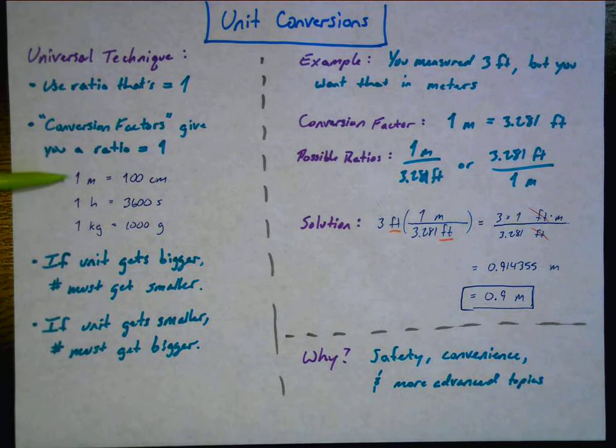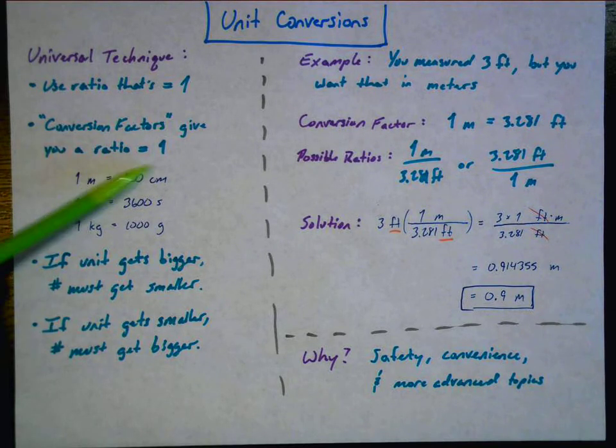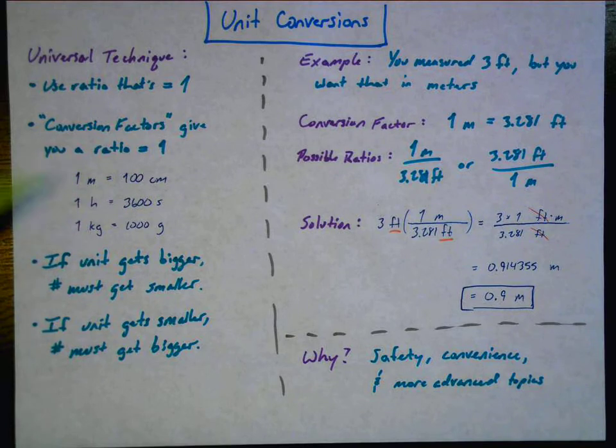These conversion factors give you a ratio equal to one. For example, one meter is equal to 100 centimeters. That's a comparison of two numbers, and it's a ratio. And when we put these together in a ratio, it will equal one because what's on the left side equals what's on the right side. The two sides are equal, hence the equal sign. One hour is equal to 3600 seconds. That will be used regularly. One kilogram is equal to 1000 grams. Those are just a few examples.